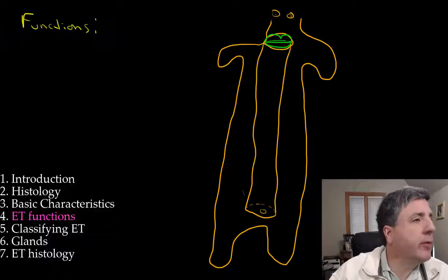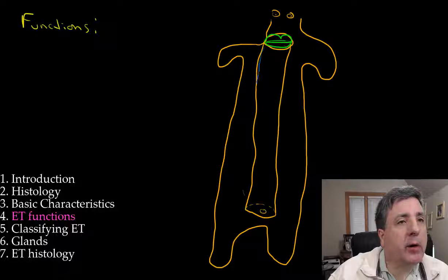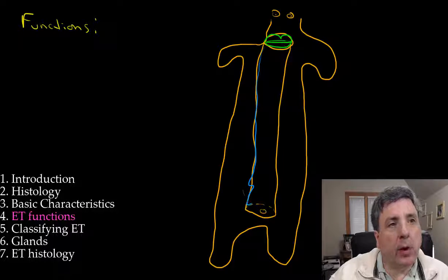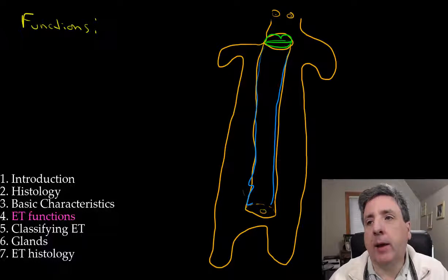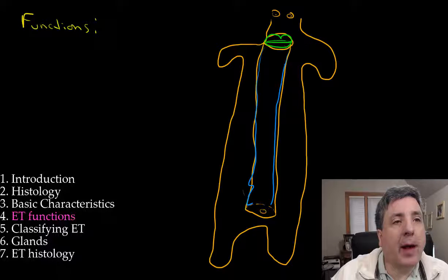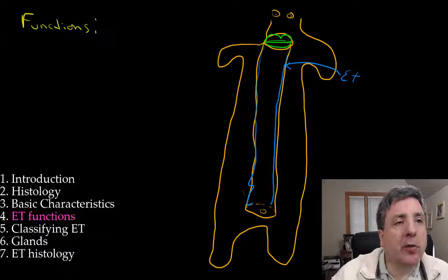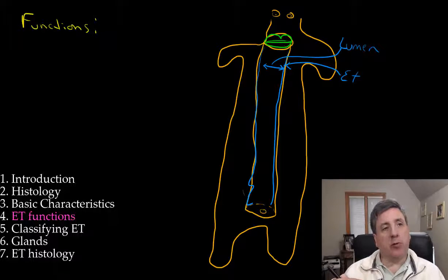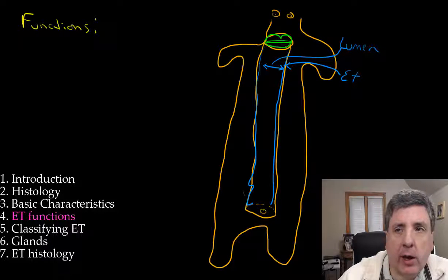We'll do blue on this one. So we know that we have a lining. So we have this lining on here. That lining is epithelial tissue. That makes this space, that is the lumen. So this is the open space within your digestive system, and we have epithelial tissue that lines the inside of this tube.